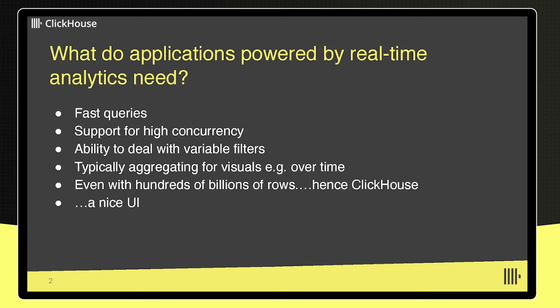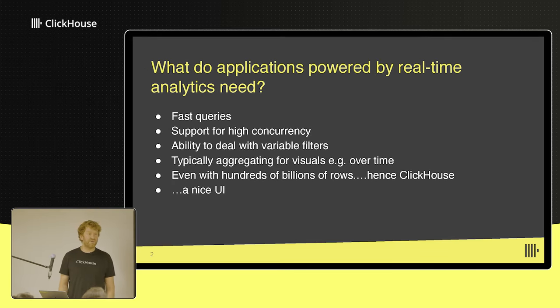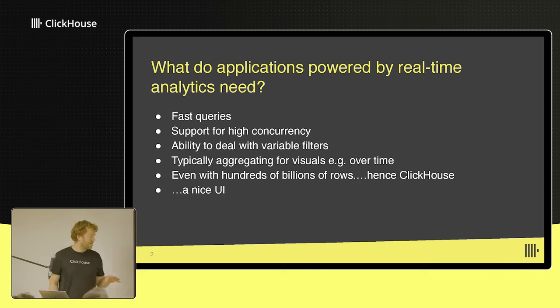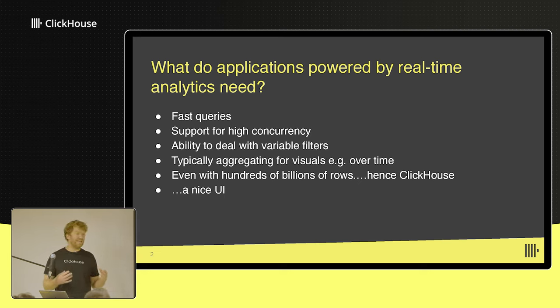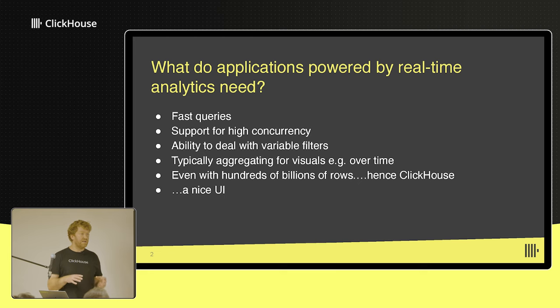ClickHouse is pretty fast, but setting the scene: if I want to build an application with real-time analytics, ClickHouse's sweet spot is fast queries. We're very fast and we also support high concurrency, which makes it ideal for building applications with real-time analytics. We're particularly fast when we have a filter in the ordering key — that's the kind of access pattern you see in an analytics application, whether it be Grafana or a custom application. Users will apply filters and drill down, and a lot of people spend time trying to make sure their ordering key is as optimized as possible.